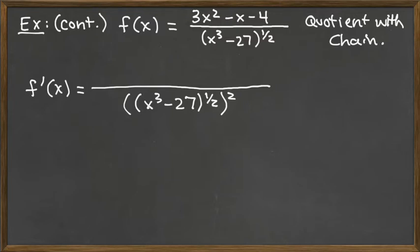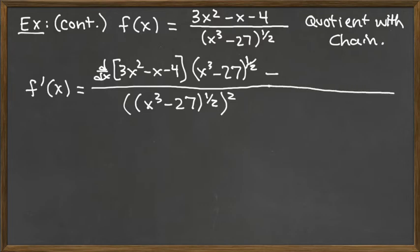So now we've got the top for the quotient rule. The quotient rule says the derivative of the top. So we've got d/dx of the 3x squared minus x minus 4 times the bottom, which is x cubed minus 27 to the one half power. So the derivative of the top times the bottom and then minus – let's extend our line – minus the top,